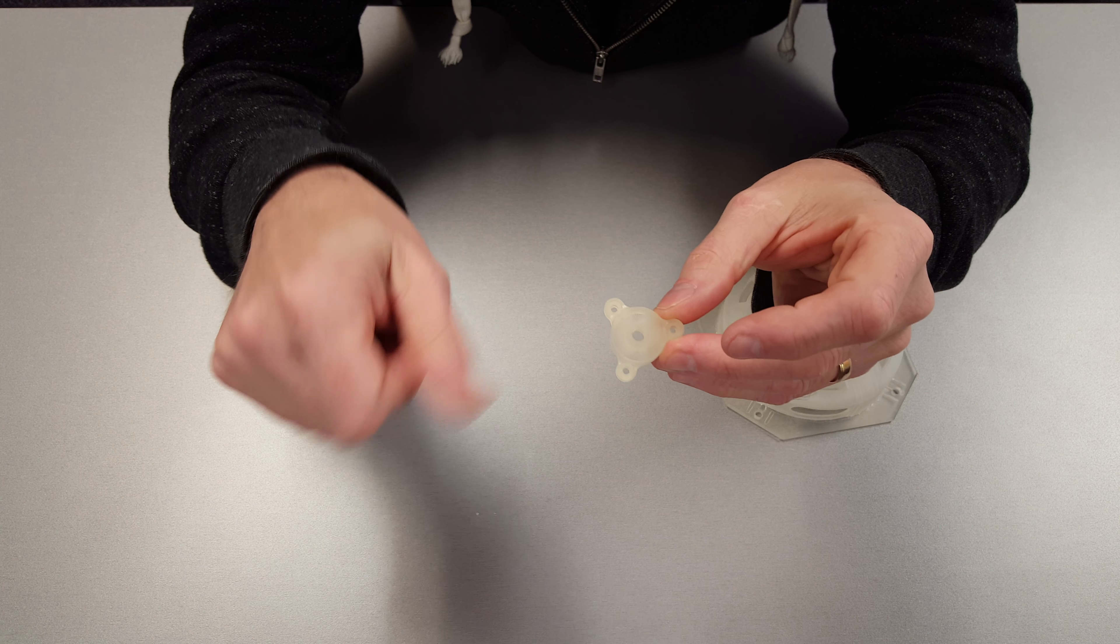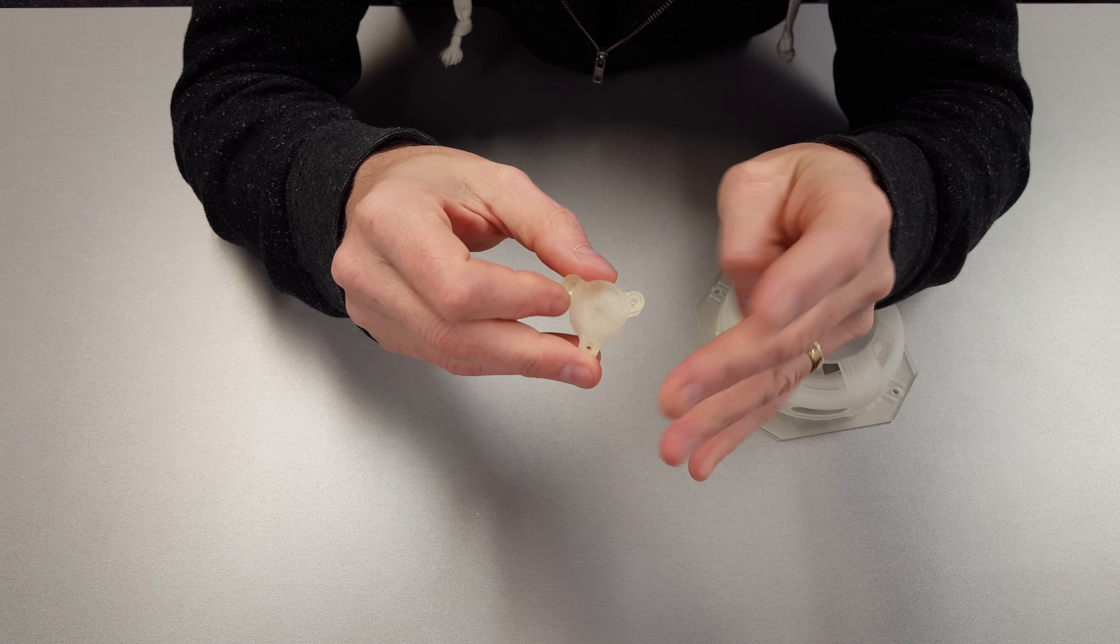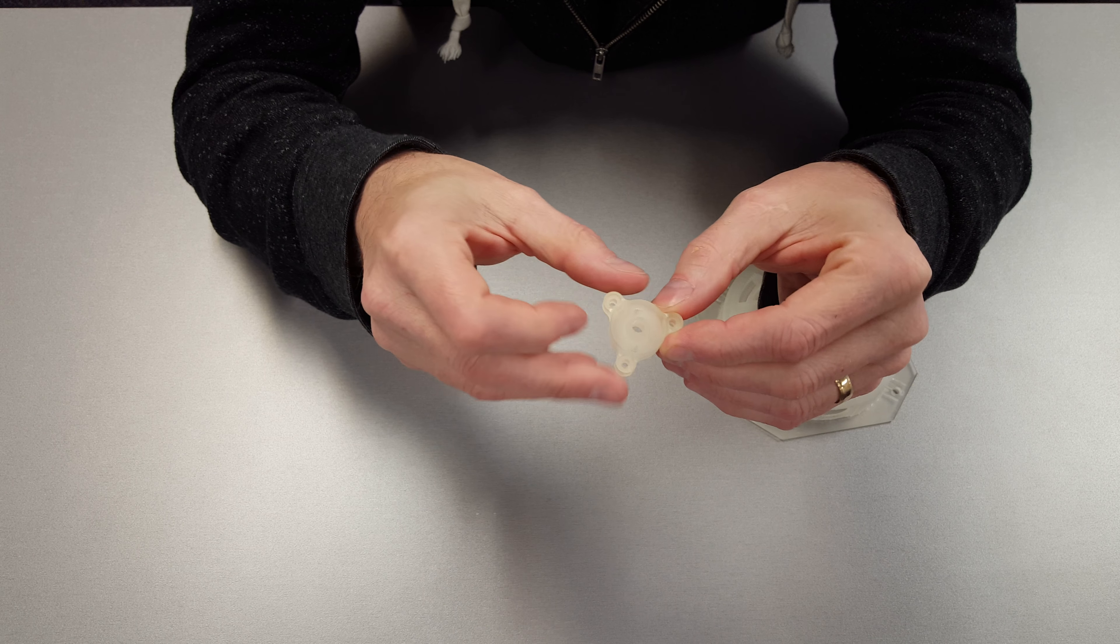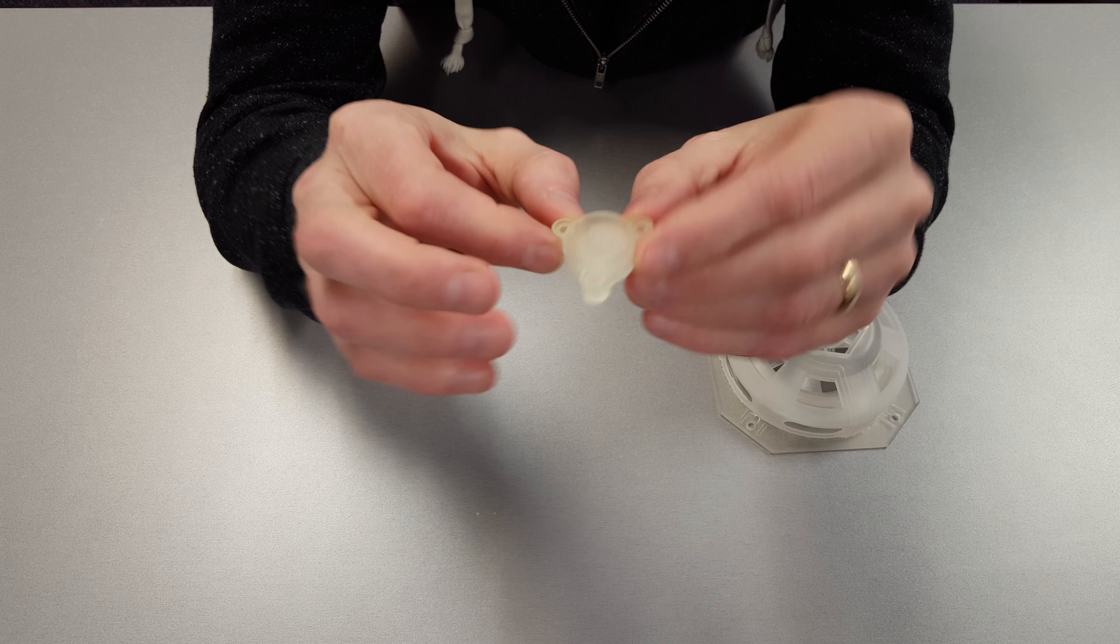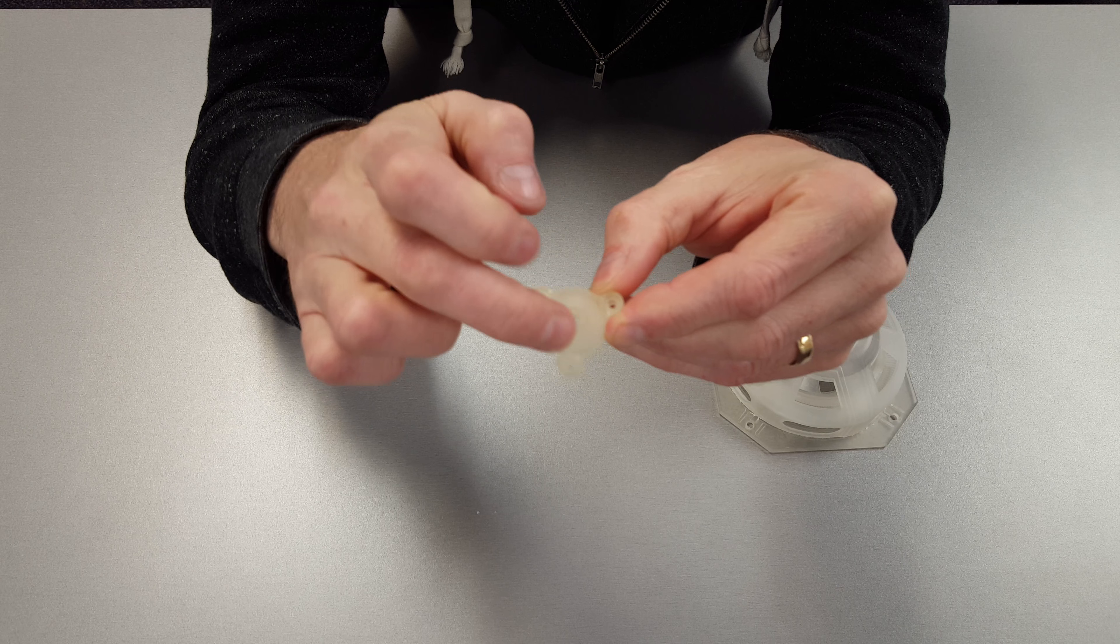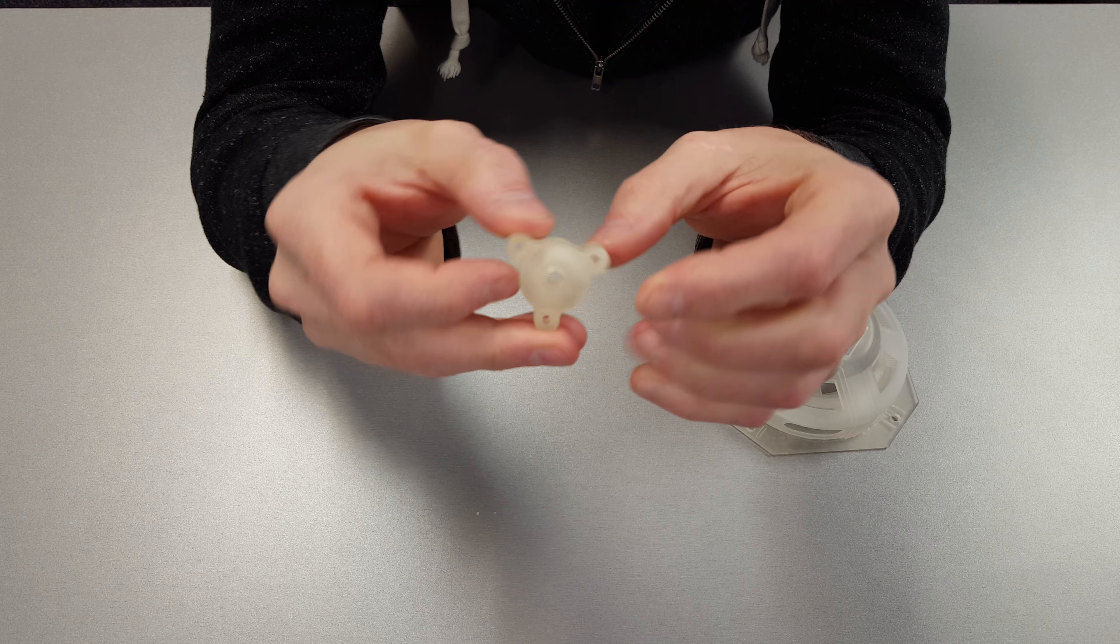Today I want to show you a couple of sample parts printed on our ProJet 3500 HD Max 3D printer. This first one is a small part with three holes and a series of turbocharger style blades on the inside.